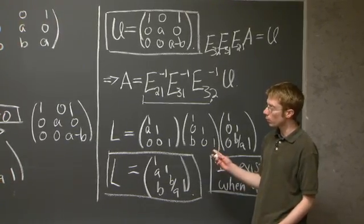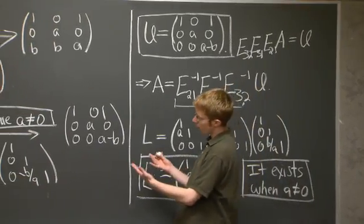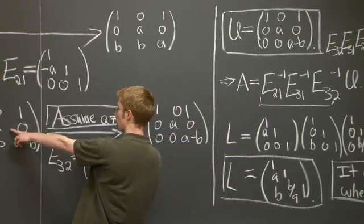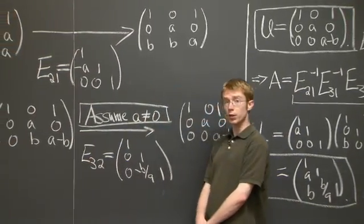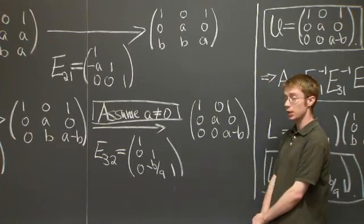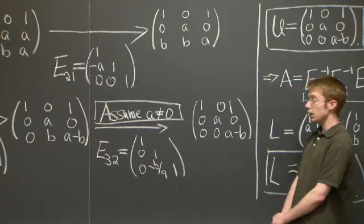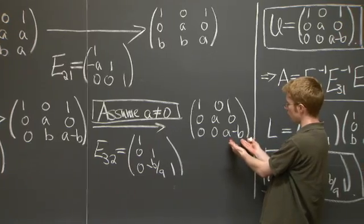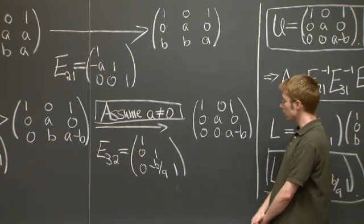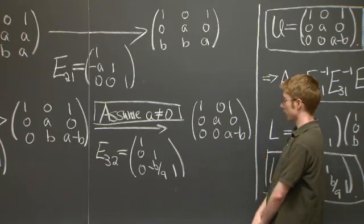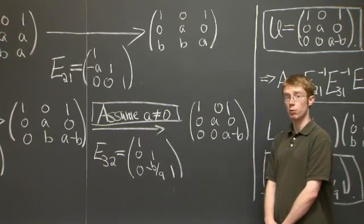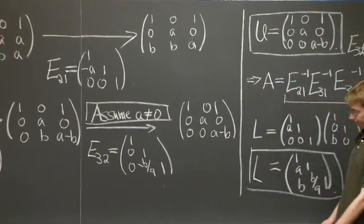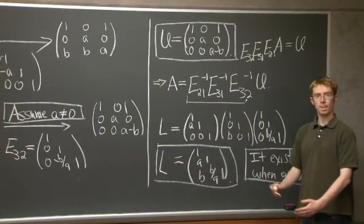Second comment is that you might be worried when you do this elimination process that we had to assume a is non-zero, because we wanted a non-zero pivot. You might worry that we might have to have a minus b be non-zero. But in fact, a minus b can be zero. It's not a problem for this entry to be zero, because we don't have to do a row exchange to get U. That's the only time when we can't do the LU decomposition. In particular, singular matrices can have LU decompositions. OK, thanks.